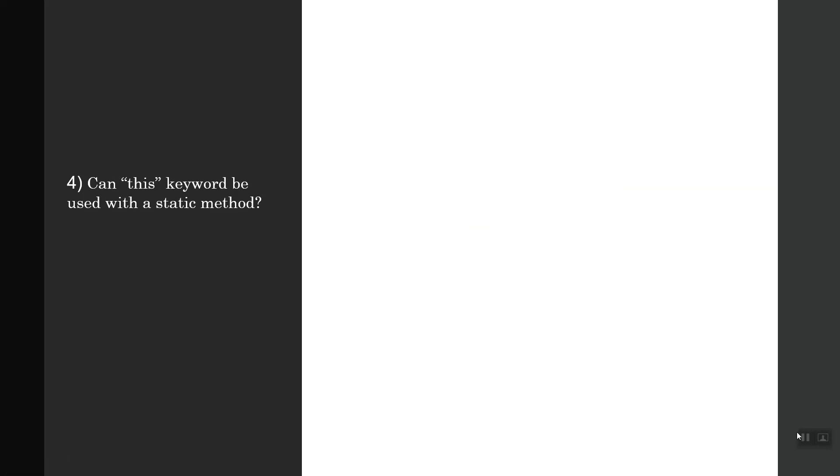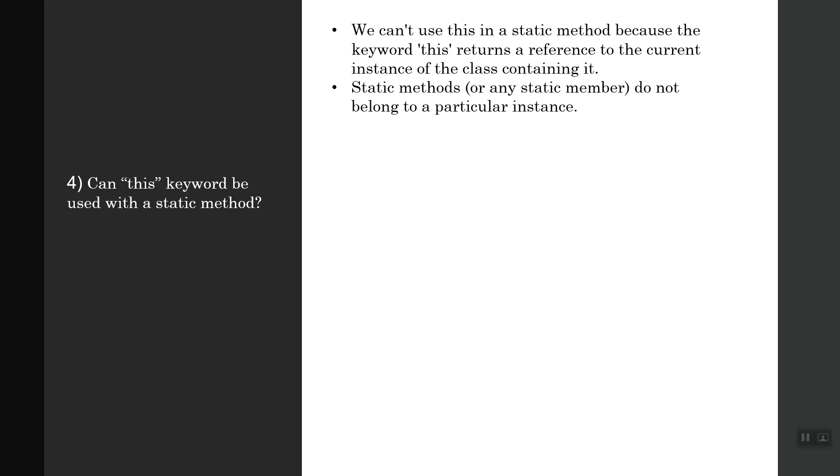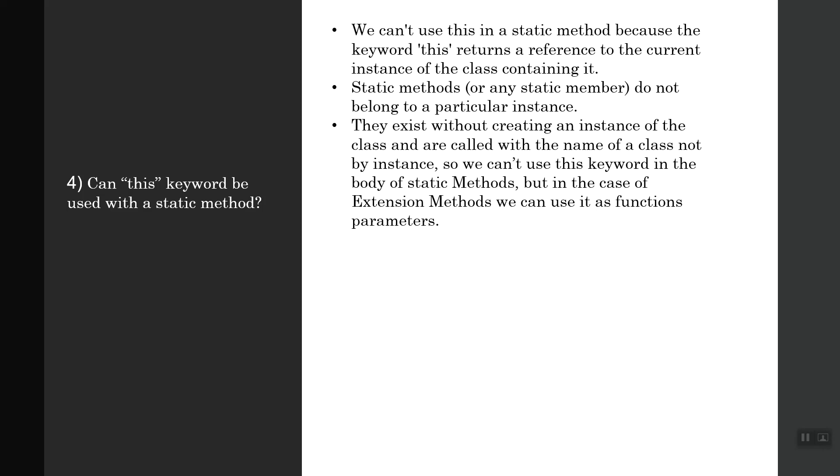The next question is can this keyword be used with a static method? We can't use this in a static method because the keyword 'this' returns a reference to the current instance of the class containing it. Static methods or any static member do not belong to a particular instance. They exist without creating an instance of the class and are called with the name of a class, not by instance. So we can't use this keyword in the body of the static methods. But in the case of extension methods, we can use it as functions parameter.